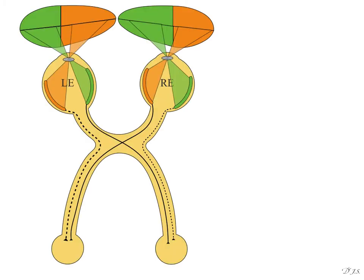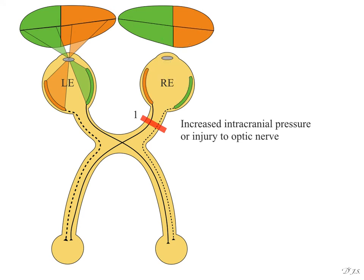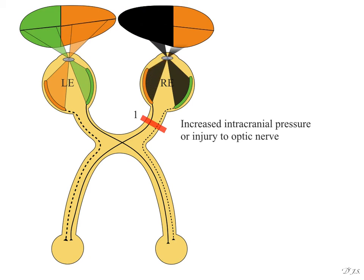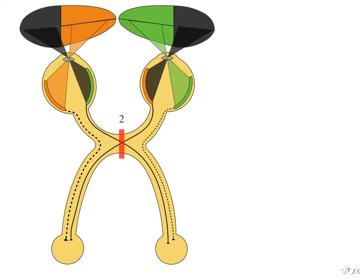Lesion number 1 may be due to increased intracranial pressure or injury to the optic tract, producing complete loss of the right visual field called anopia — a monocular vision loss.